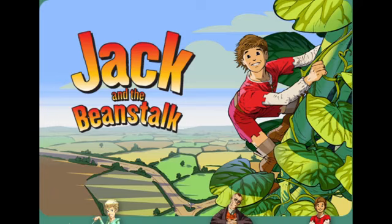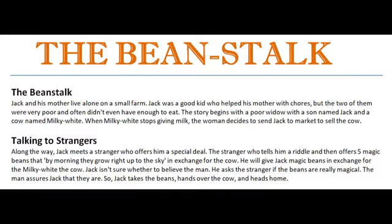Jack and his mother live alone on a small farm. Jack is the protagonist — the main real character in this story. Jack lives with his mother, who is a widow. They are very poor people. Jack was a good kid who helped his mother with chores. There were different types of household jobs and other works. But the two of them were very poor and often didn't have enough to eat.